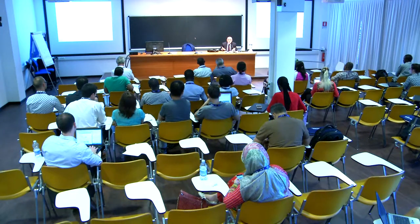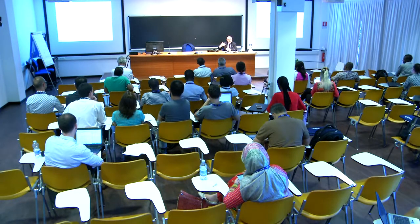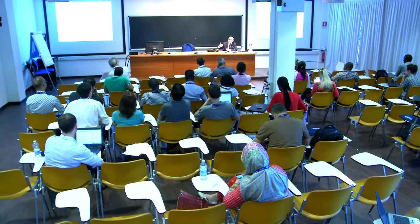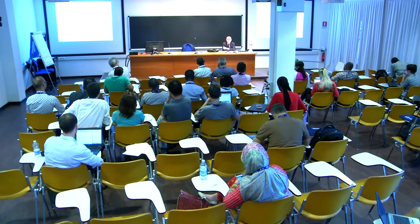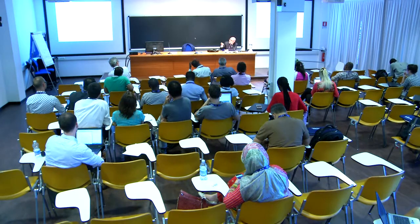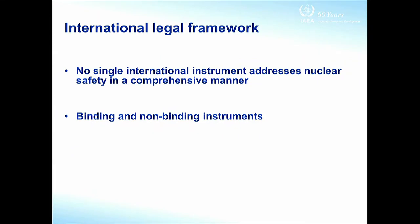Even a code of conduct — a typical example of a non-binding instrument — doesn't oblige the state to enact conforming national rules. But if the state does adopt these rules at the national level, they become binding there. So at the national level, it is not so important whether rules were adopted because of a treaty obligation, or because the state simply decided it was a good idea to comply with the rules in a code of conduct. This is why the binding/non-binding distinction is important at the international level, but not so important at the national level.